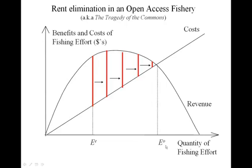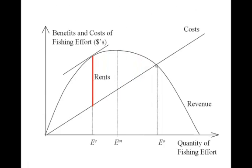This is what we call the open access equilibrium — a point where there's no longer any incentive for fishermen to increase the level of effort. Garrett Hardin in 1968 referred to this as the tragedy of the commons. It's a tragedy because you have a natural resource capable of generating substantial profits for society as a whole, but economic incentives drive us to a situation where costs equal revenue, there are no more profits, and fishermen are literally just barely covering their costs. The three key points on this curve are: the economically efficient level of effort where rents are maximized, the maximum sustainable yield level, and the open access equilibrium where costs equal revenue.